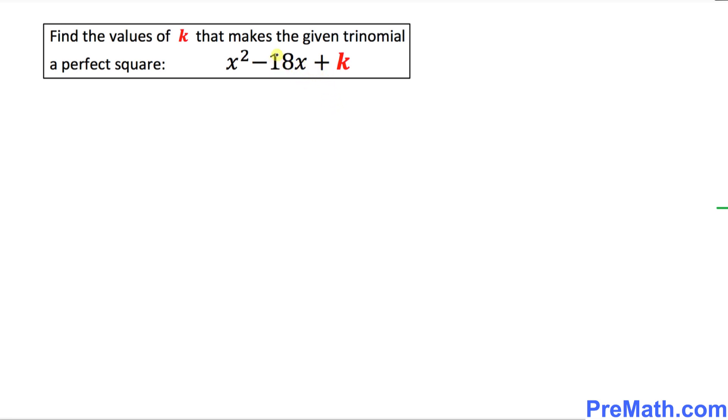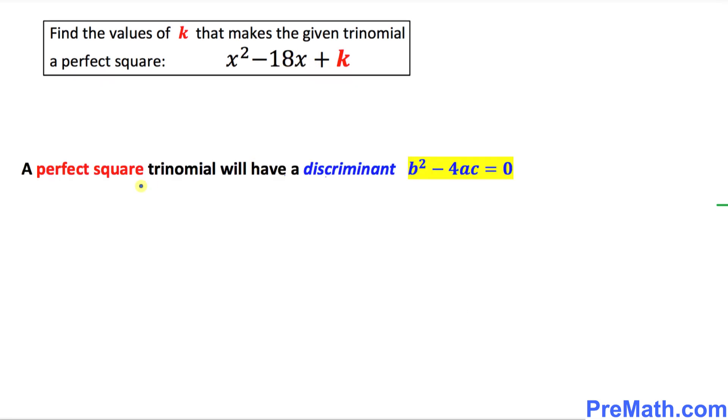We want to find the value of k for this given trinomial x² - 18x + k such that this becomes a perfect square. And we know that a perfect square trinomial will always have a discriminant b² - 4ac equal to 0.